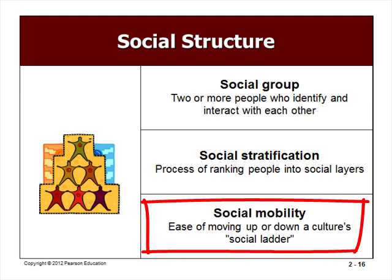Social mobility is the ease with which individuals can move up or down a cultural social ladder. A caste system is a system of social stratification in which people are born into a social ranking with no opportunity for social mobility, whereas a class system is one in which personal ability and actions determine status and mobility. Highly class-conscious cultures can offer less mobility but experience more class conflict.